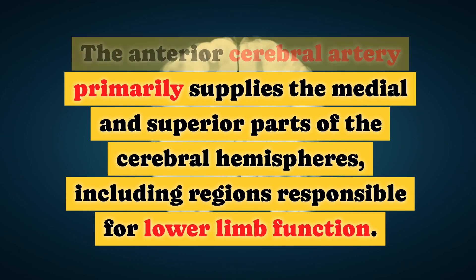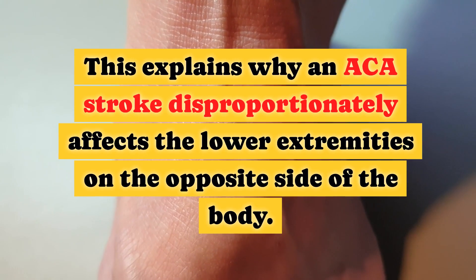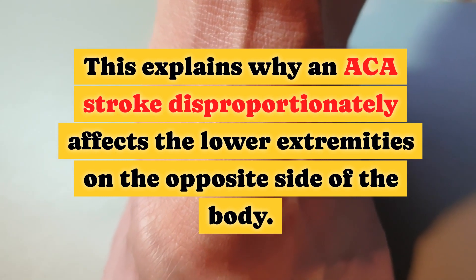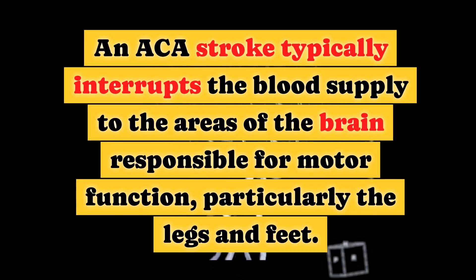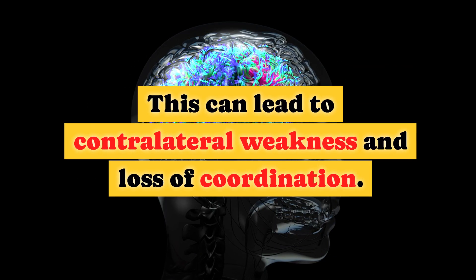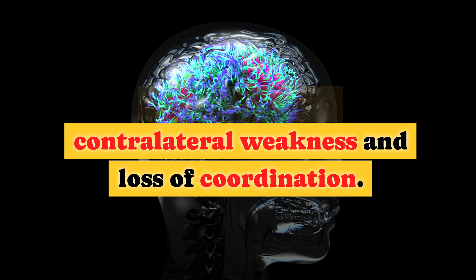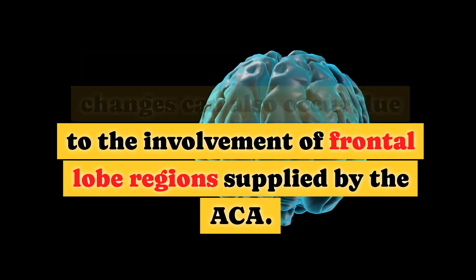Why are lower extremities more affected? The anterior cerebral artery primarily supplies the medial and superior parts of the cerebral hemispheres, including regions responsible for lower limb function. This explains why an ACA stroke disproportionately affects the lower extremities on the opposite side of the body, particularly the legs and feet, and can lead to contralateral weakness and loss of coordination. Cognitive and behavioral changes can also occur due to the involvement of frontal lobe regions supplied by the ACA.